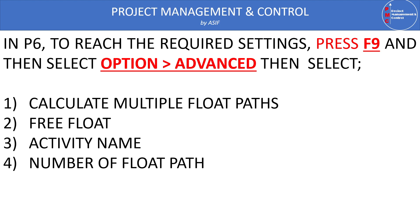To configure this in Primavera P6, when you press the F9 button to schedule the project, the Schedule dialog box opens. On the right side there is an Options button — click it and the Scheduling Options dialog box appears. Select the Advanced tab, and there you will find the option to 'Calculate Multiple Float Path.' Once selected, additional options are activated where you choose between total float or free float, specify the end activity, and set the number of float paths. For a large project with thousands of activities, you may need a larger number of float paths.